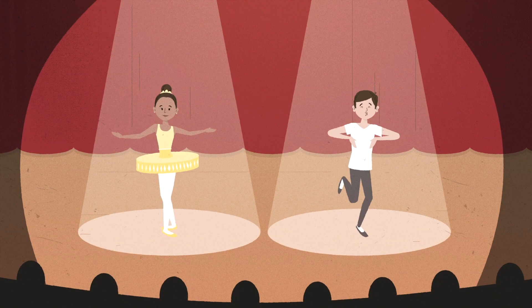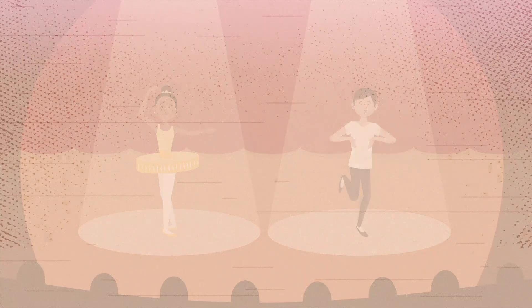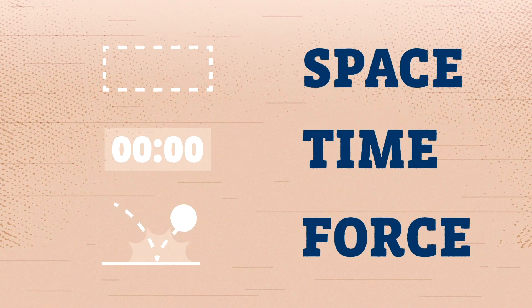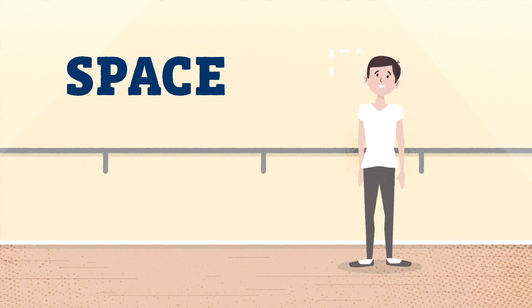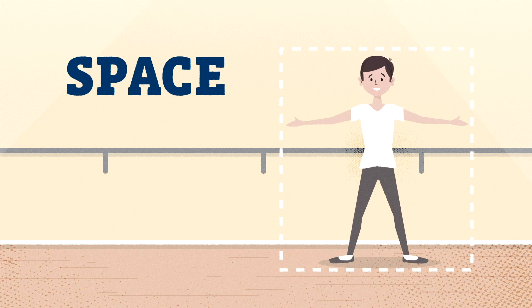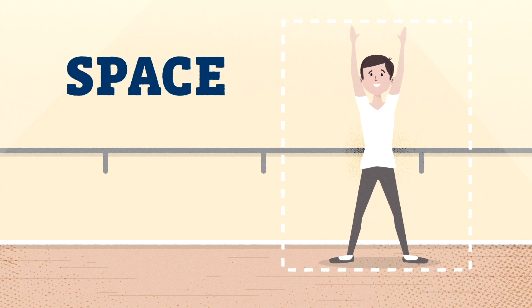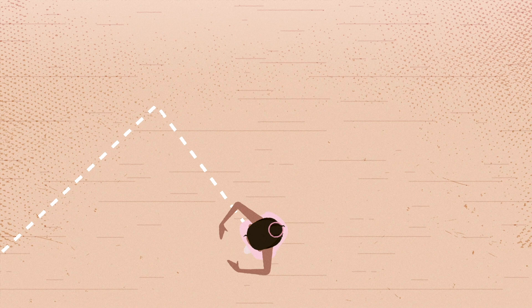Their secret? Understanding the elements of dance. Space, time, and force. Space refers to the shape of the dancer's body, its level, like high or low, and its pathway, the pattern of movement across the floor.